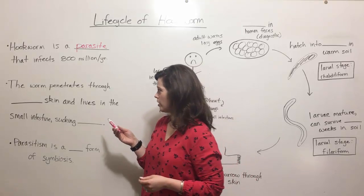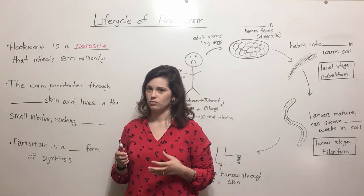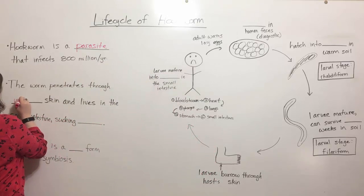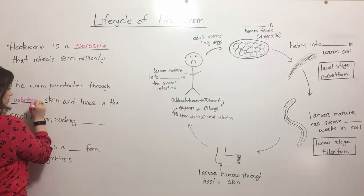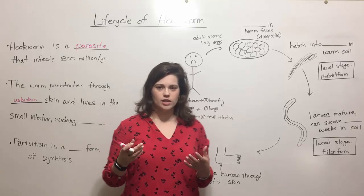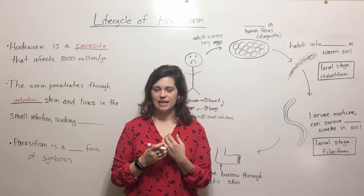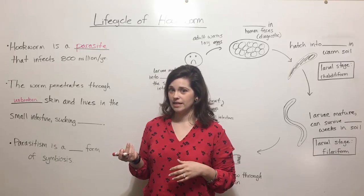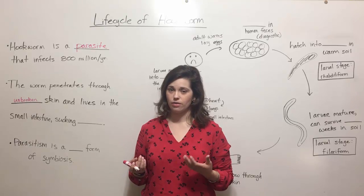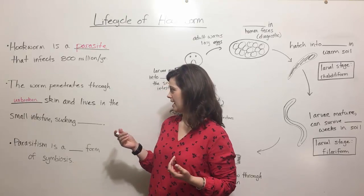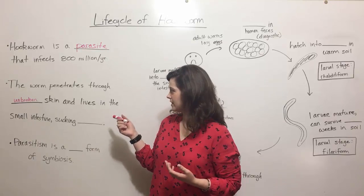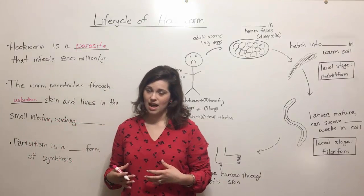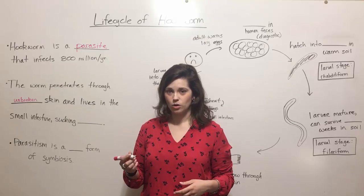The worm is particularly noteworthy because it actually penetrates right through unbroken skin of the host. A lot of times various pathogens will actually need a cut in the skin to enter, but hookworm doesn't need that — it can actually burrow right through healthy, unbroken skin. Ultimately it lives in the small intestine, where it attaches to the intestinal walls, sometimes for years, and sucks the host's blood.